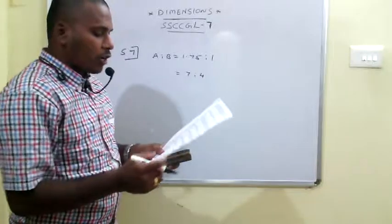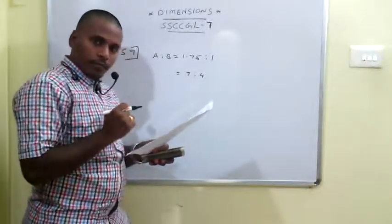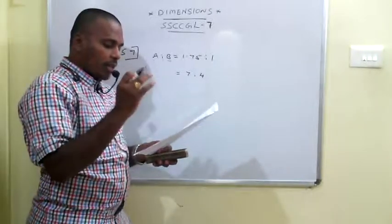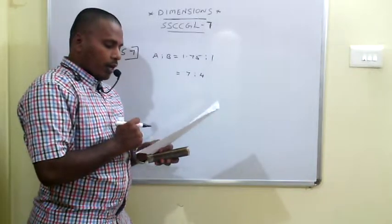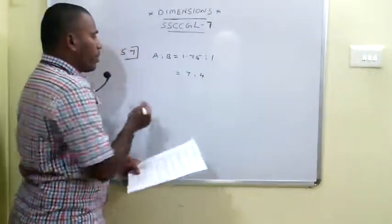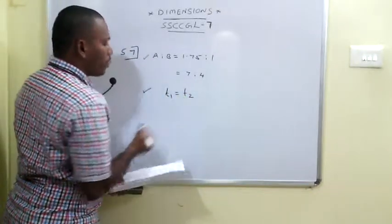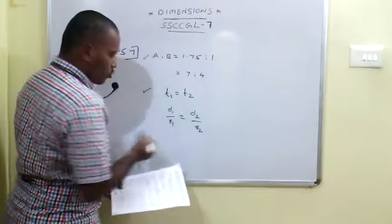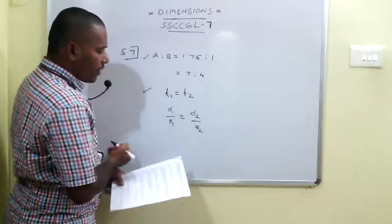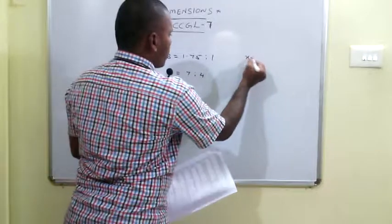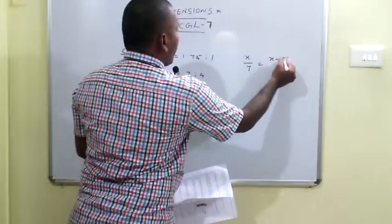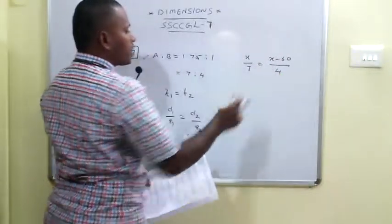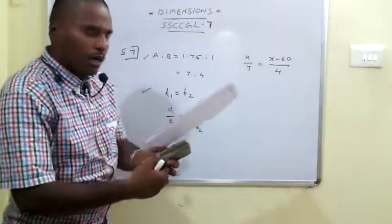If A gives B a start of 60 meters, how far should the winning post be so that A and B reach there at the same time? Since T1 = T2, we have D1/S1 = D2/S2. A covers distance X at speed 7, and B covers X - 60 at speed 4. So X/7 = (X - 60)/4. On cross multiplication, X = 140 meters. This is the 57th problem.